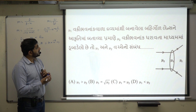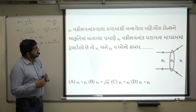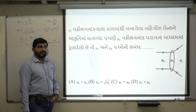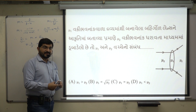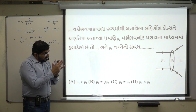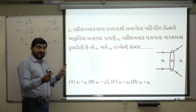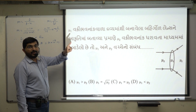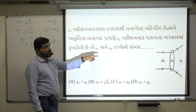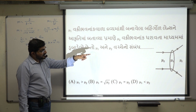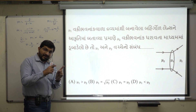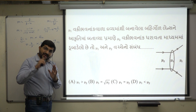Next question: A biconvex lens made from a material of refractive index μ1 is immersed in a liquid of refractive index μ2. If μ1 and μ2 are such that a convex lens behaves as a diverging lens — we have covered this: if the surrounding medium has a higher refractive index, a converging lens will behave as a diverging lens.